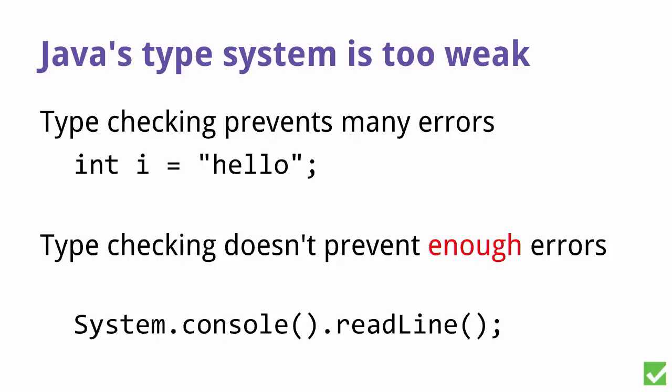So it's a tool for Java. The fundamental problem with Java's type system is that it's too weak. It prevents you from putting hello world into an int, but it doesn't prevent other types of errors. Here's a piece of code that can actually fail with an exception. It might throw a null pointer exception — System.console can return null, for instance if you're running on an embedded device or essentially anything that's headless. The type system doesn't tell you this.